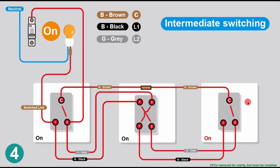We walk to the third switch and switch it on, so all switches are now on. Following the power: it comes in through the common, through the second two-way switch, through the intermediate, and yes - the switch is on, the light is on. Going the other way on the grey, that's not making a connection - but the light is on.